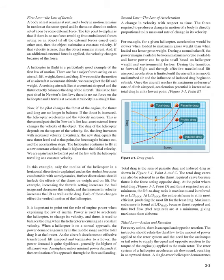The key point to explain is that if there is no net force resulting from unbalanced forces acting on an object — if all the external forces cancel each other out — then the object maintains a constant velocity. If that velocity is zero, then the object remains at rest. And if an additional external force is applied, the velocity changes because of the force. A helicopter in flight is a particularly good example of the first law of motion, with four major forces acting on it: lift, weight, thrust, and drag.